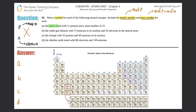For part a, they want the alkali metal with 11 protons and a mass number of 23. The alkali metal group is group 1, starting with lithium and going down to francium. Note that hydrogen is not part of the alkali metals because hydrogen is a non-metal.